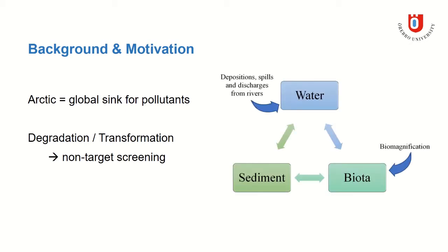Within the Arctic, pollutants can travel between the water, biota and sediment compartment. And also within the biota compartment, they can enrich in higher trophic level species, which is called biomagnification.